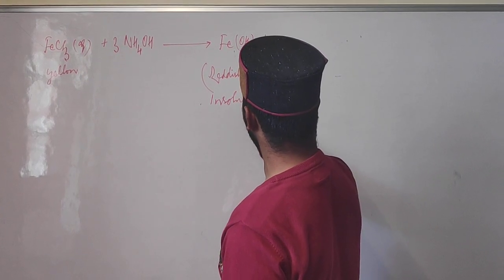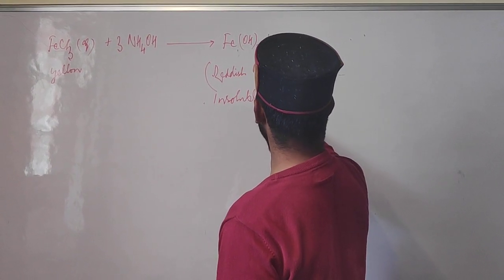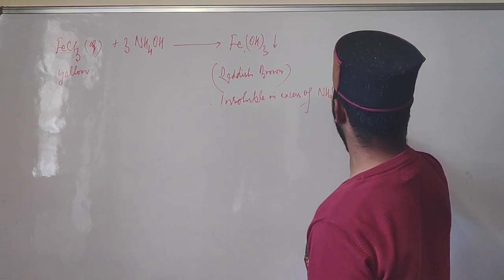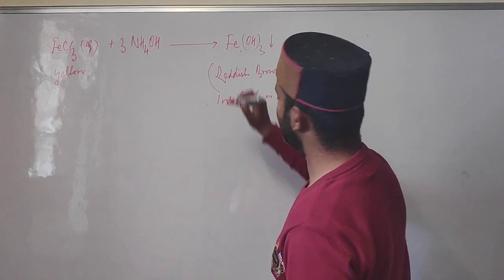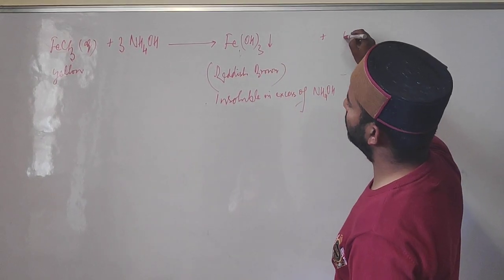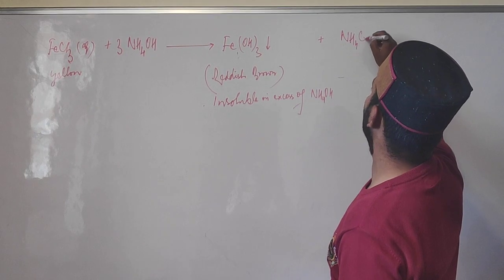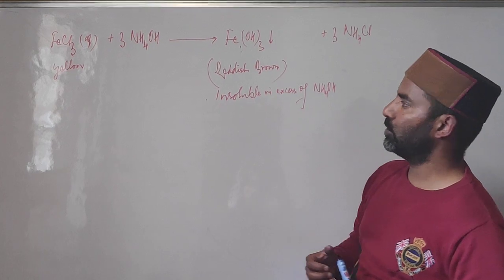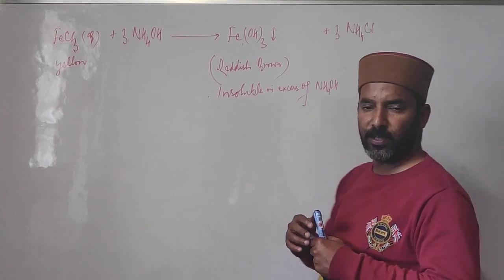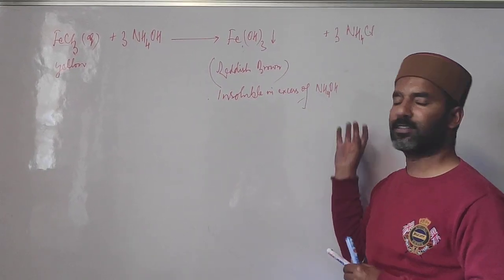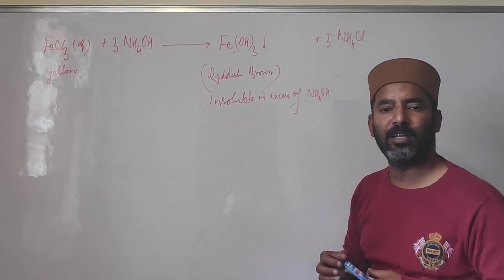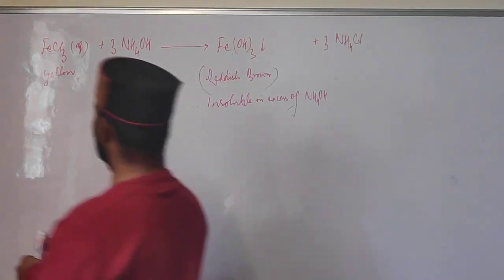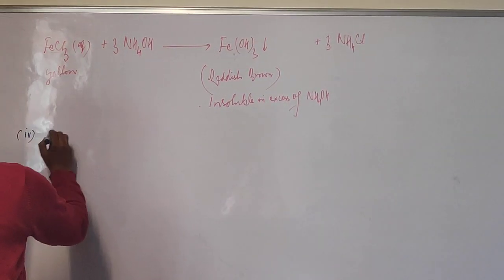This reddish-brown precipitate remains insoluble in excess ammonium hydroxide — it will not dissolve. Ammonium chloride, being water soluble, remains in solution. So if a salt solution gives a reddish-brown precipitate that remains insoluble in excess ammonium hydroxide, the salt contains ferric ions Fe³⁺.